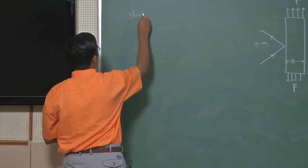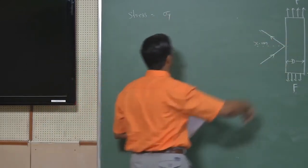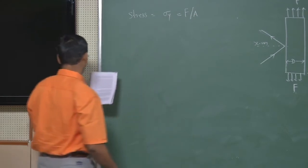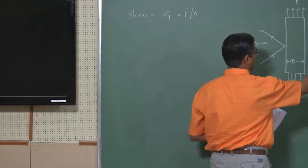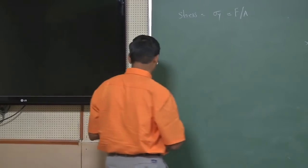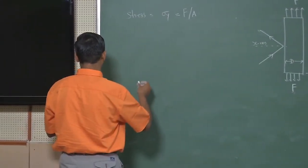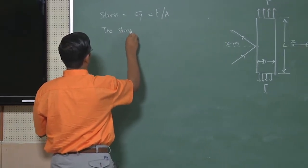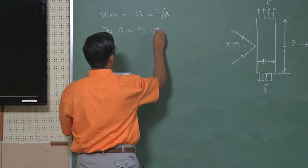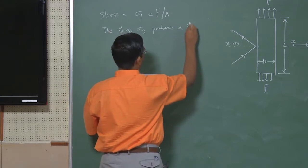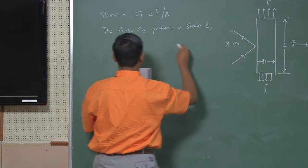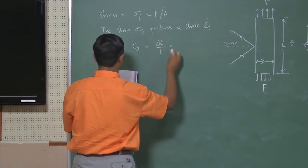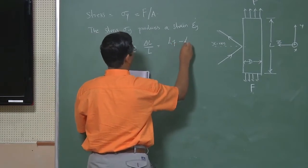We will write a basic expression for stress. Force equals sigma y, because it is in the y direction. So we write force by area in the y direction, and assume there is no force in the x and z direction. This stress sigma y produces a strain epsilon y, which is given by epsilon y equals delta L by L, which is L final minus L initial divided by L naught.